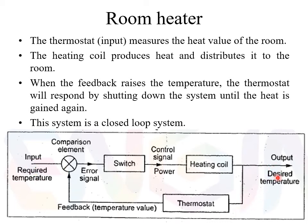The actual room temperature is 25 degrees Celsius. That is sensed by the thermostat and given to the comparison element. The required temperature is 30 degrees Celsius and the actual temperature is 25 degrees Celsius, so the comparison element compares the two signals and generates an error. The switch then operates the heating coil, which is switched on so that the temperature starts to increase from 25 degrees Celsius — rising to 26, 27, and so on.